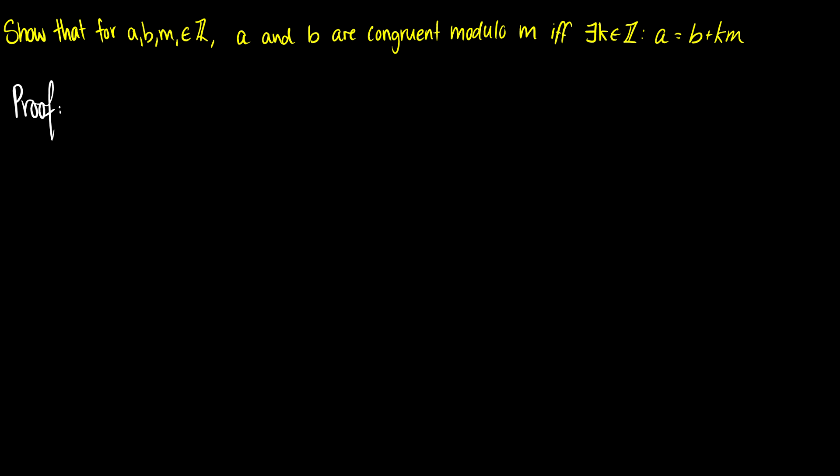In this video, we're going to do some proofs with modulus operators. So for the first one, we want to show that for integers a, b, and m, if a and b are congruent modulo m, if and only if there exists a k such that a is equal to b plus km.